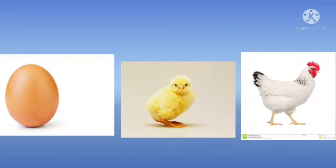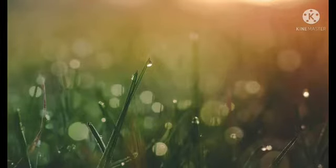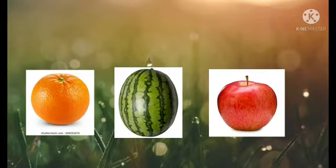Look here, children. In this figure, you can see the position of egg, chick, and hen. The egg is before the chick, and the hen is after the chick. The chick is in between the egg and the hen.